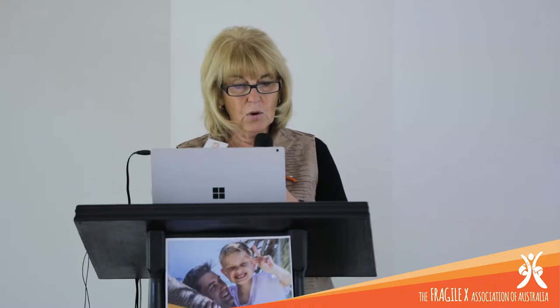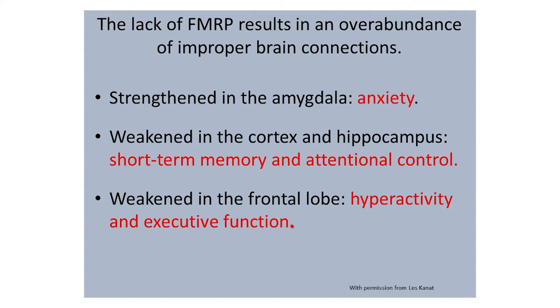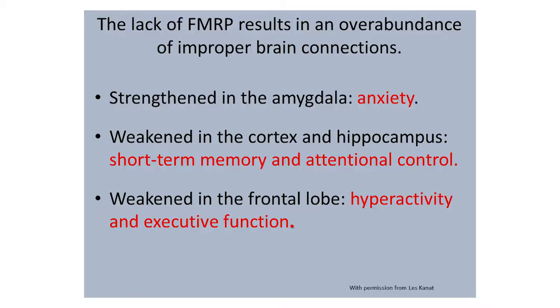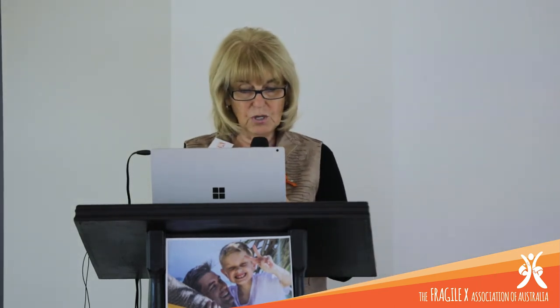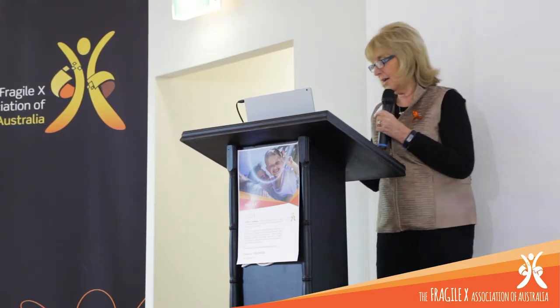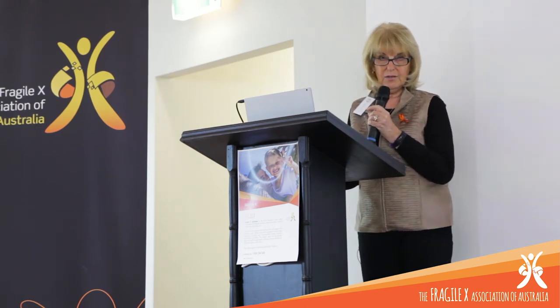There is scientific evidence that supports the fact that anxiety is a big deal, because that overabundance in the area of the amygdala is really going to cause them to be anxious. We also know there are areas of weakness that affect short-term memory and attentional control — we see that in our boys and girls. The weakened frontal lobe causes issues with hyperactivity and executive functioning, which means planning and executing a plan. Even some carriers tend to have the same problem with executive functioning.